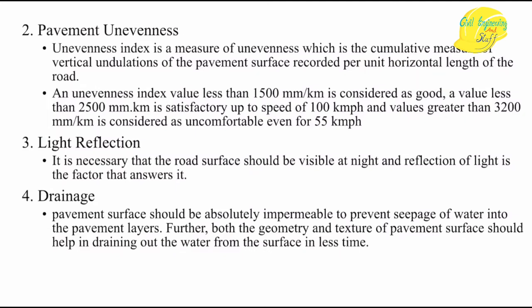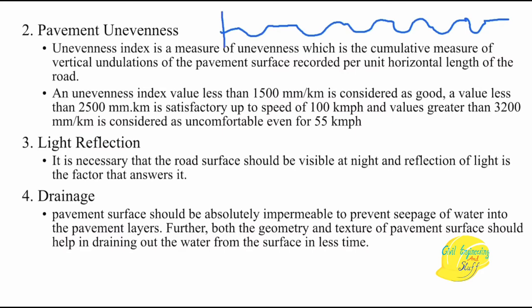Other pavement surface characteristics include pavement unevenness — the undulations, potholes, or other irregularities in a road section. More unevenness means more discomfort for passengers. An unevenness index of less than 1500 mm per kilometer is considered good; 1500 to 2500 mm per kilometer is satisfactory; and 3200 mm per kilometer is uncomfortable even at 55 km/h. These standard parameters are for 100 km/h speed.